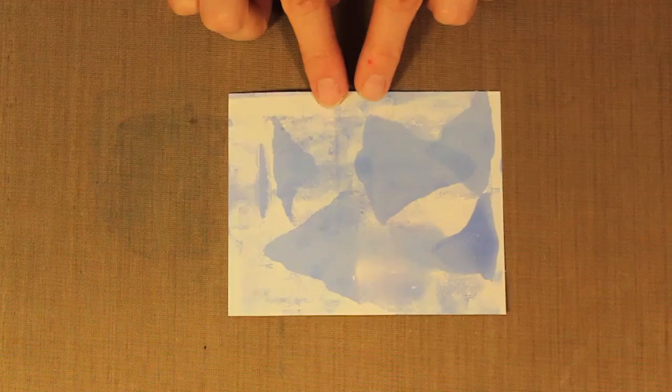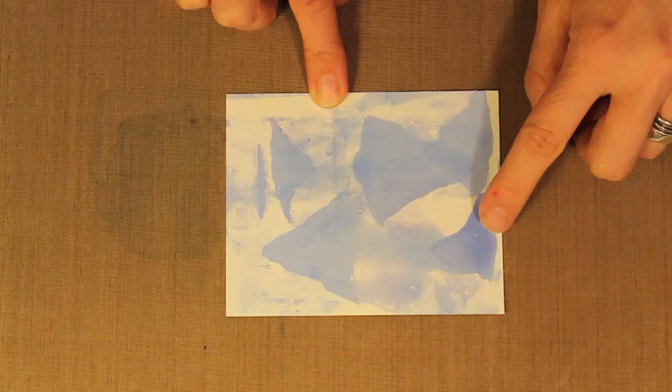And it doesn't look like much at first, but then as it starts to react with the alcohol ink on there, you start to get a very subtle kind of spattered effect. And I hope that you can see this. You can of course go back and add more if you want to.